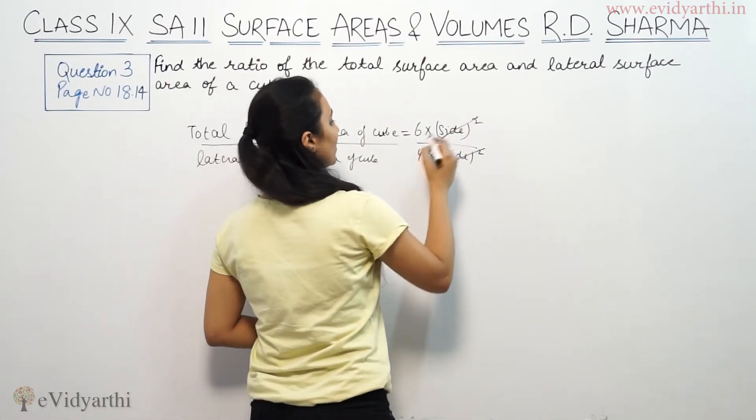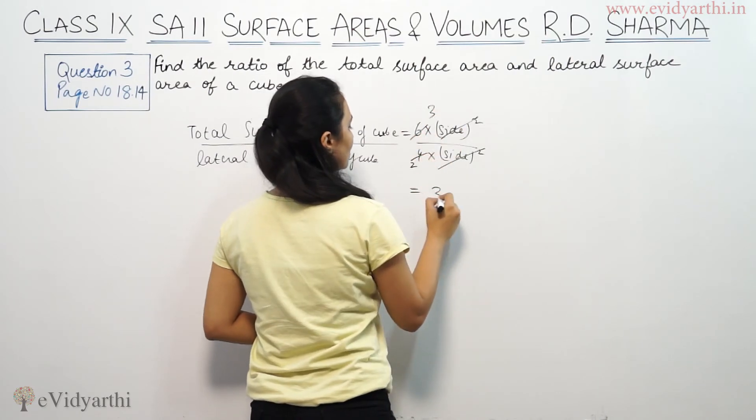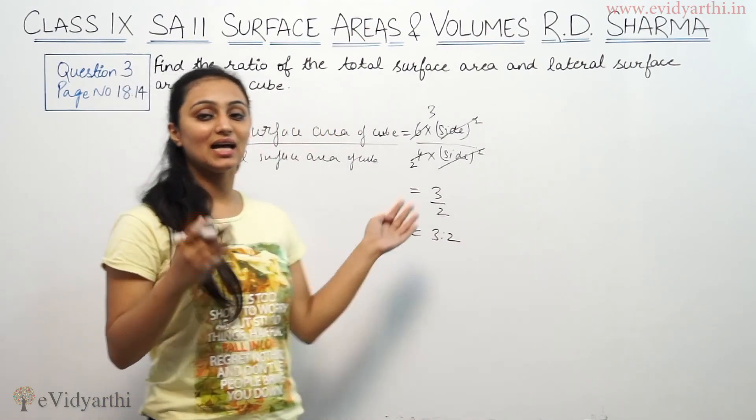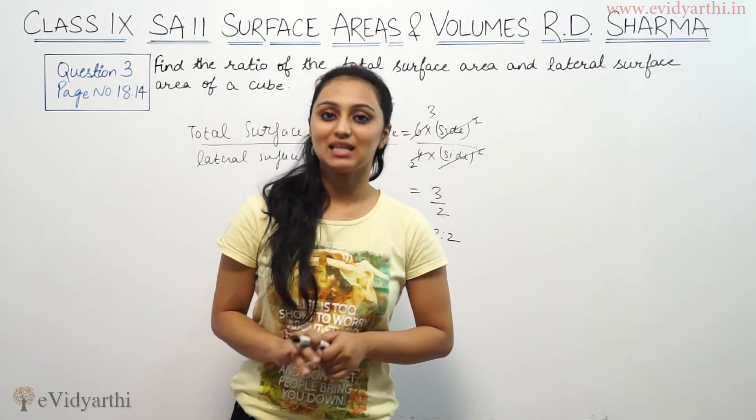So side square to side square cancels. This is 6 over 4, which is 3 upon 2, that means 3 is to 2. So the ratio of total surface area and lateral surface area of the cube is 3 is to 2.